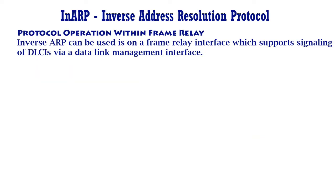Regarding protocol operation within frame relay: one case where Inverse ARP can be used is on a frame relay interface which supports signaling of DLCIs via a data link management interface. An InARP-equipped station connected to such an interface will format an InARP request and address it to the new virtual circuit. If the other side supports InARP, it may return a response indicating the protocol address requested.